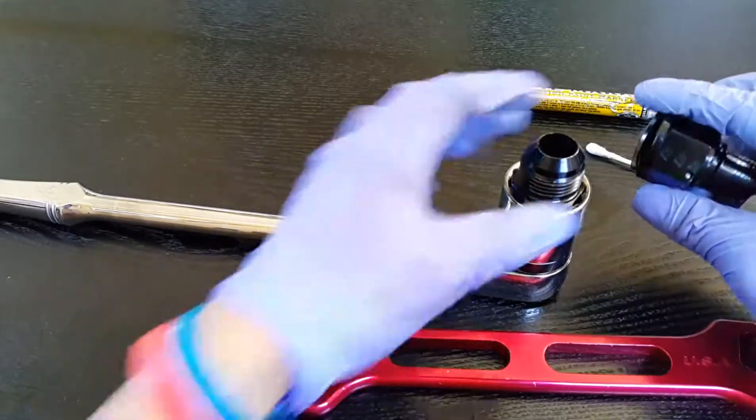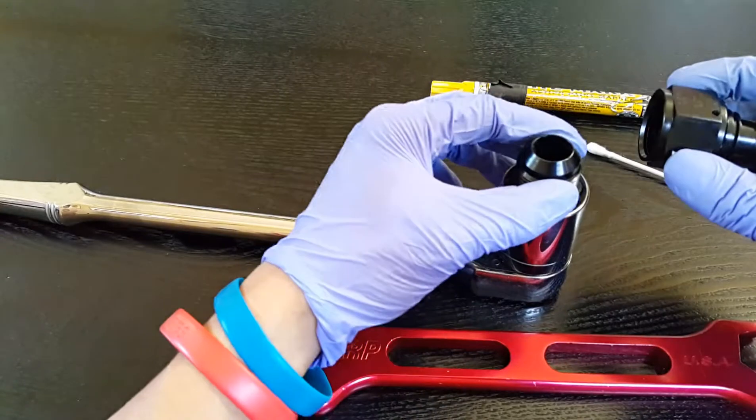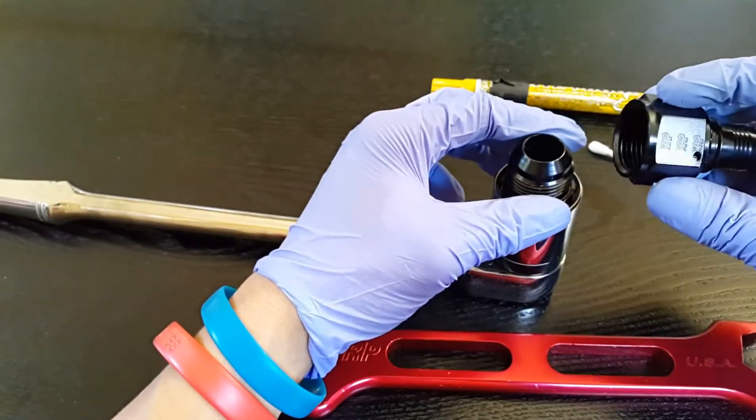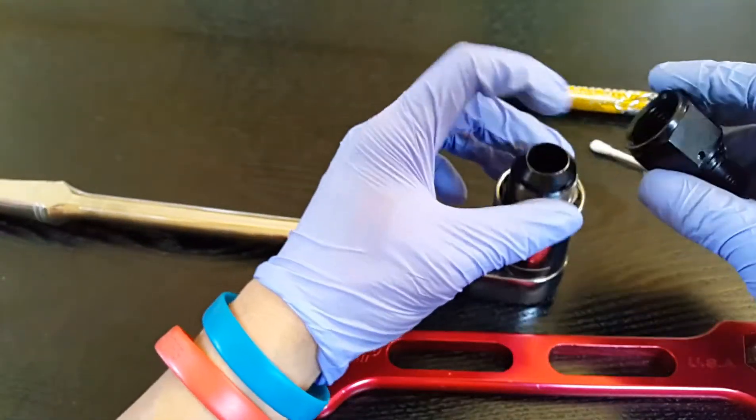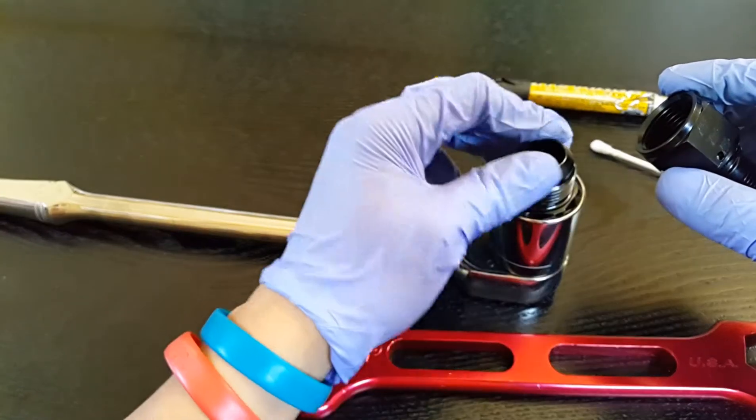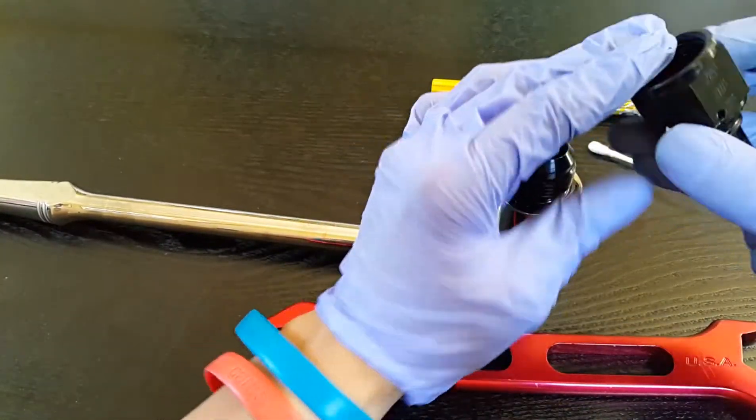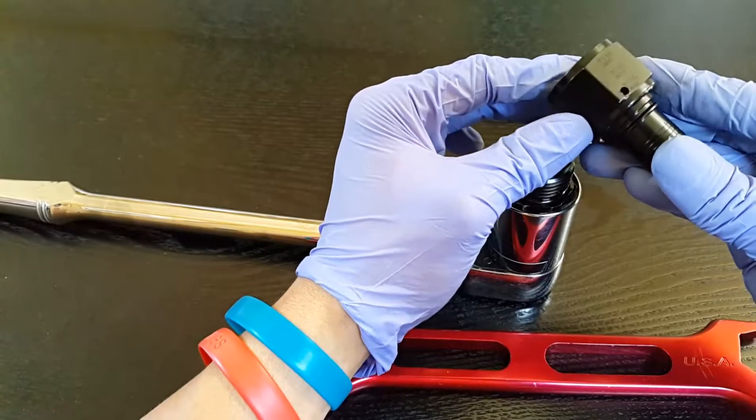These are one of the fittings that I was using. These are dash 12 AN fittings for the oil lines. These are some old parts but they're the same exact fittings from XRP that I use.